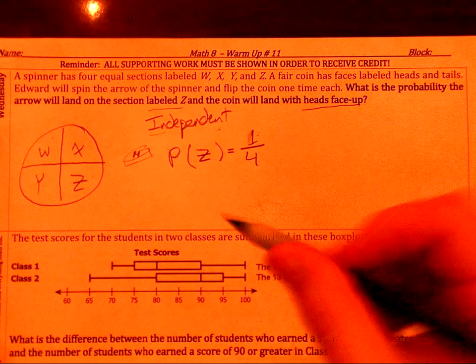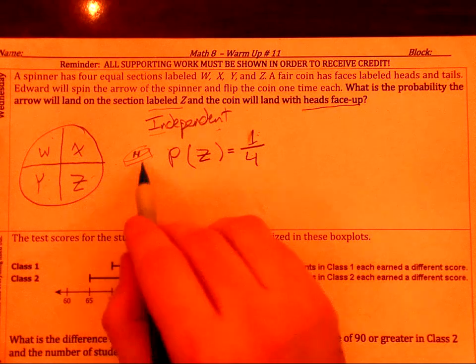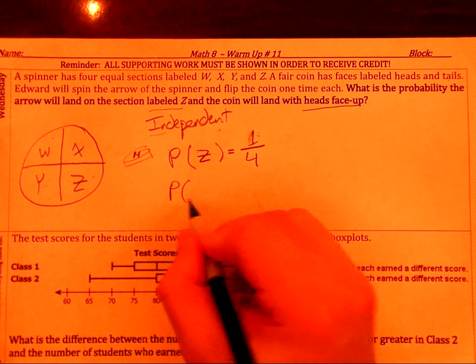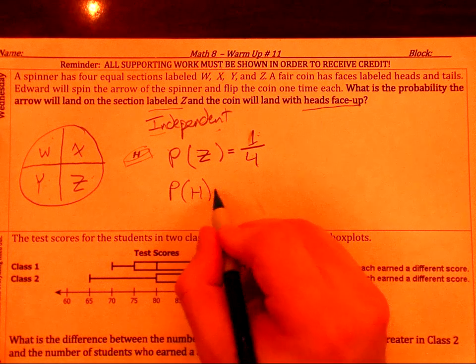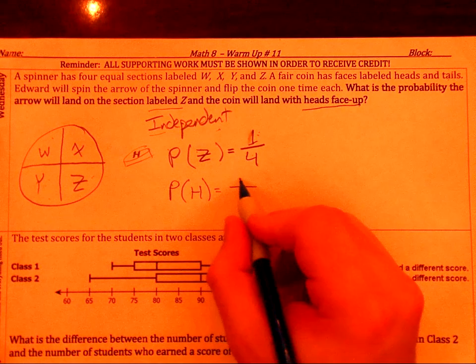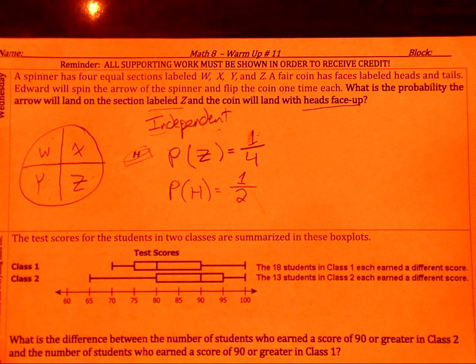Similar idea. Again, since it's independent, it is not going to affect each other. So we just take it normally. So the probability of how many sides have heads. So we have one side out of the two are heads.